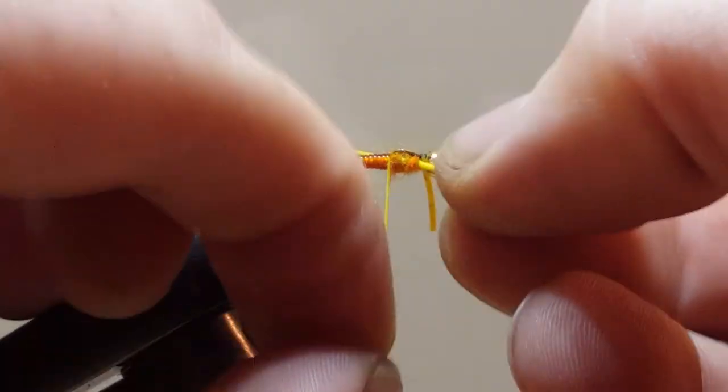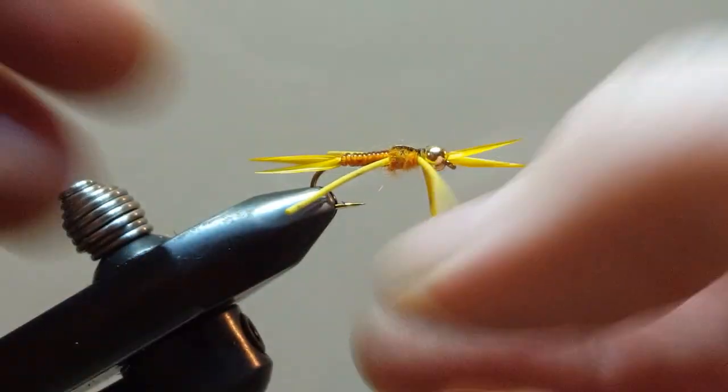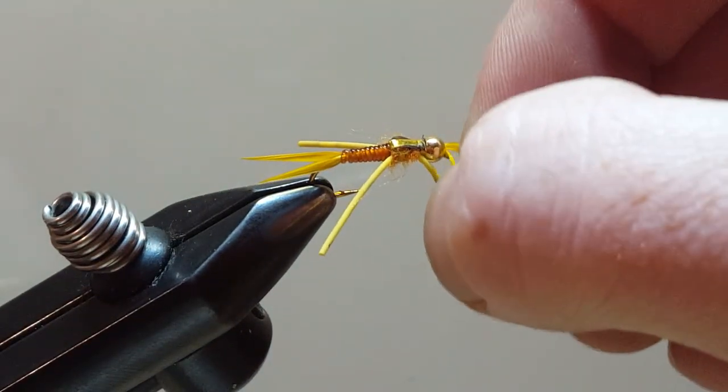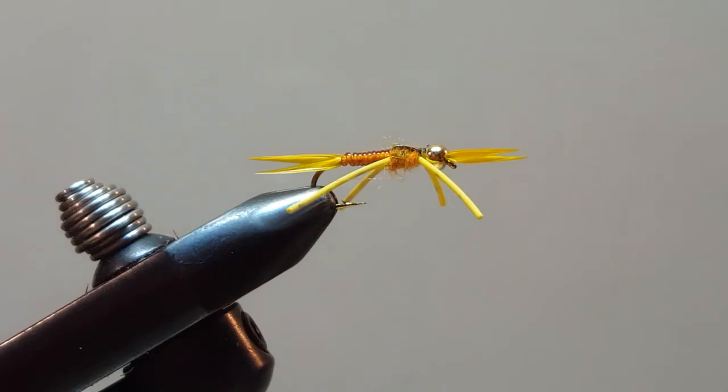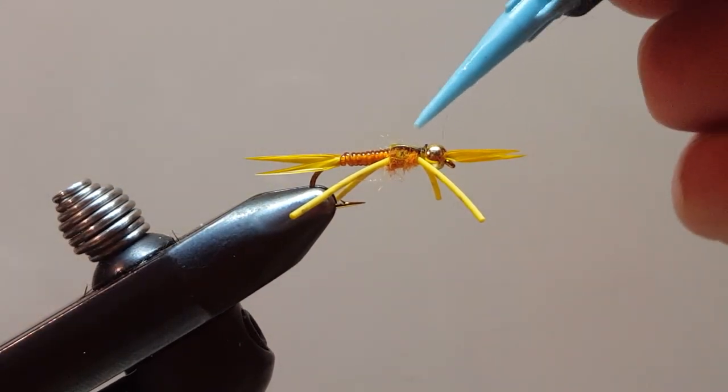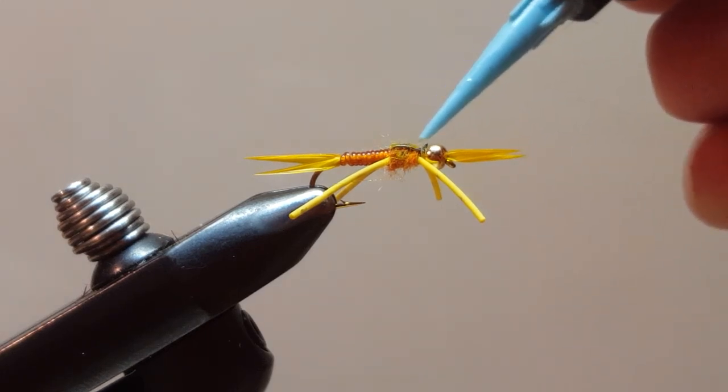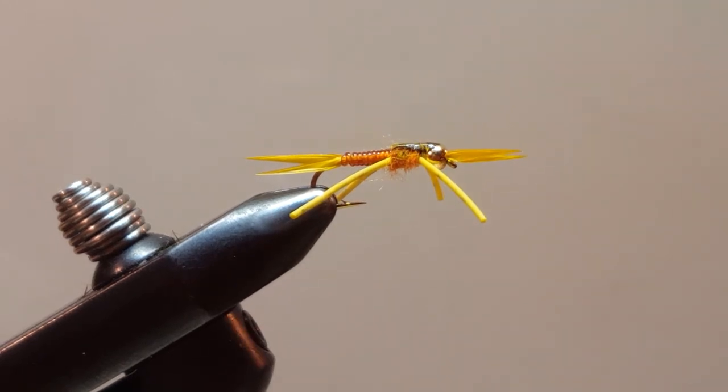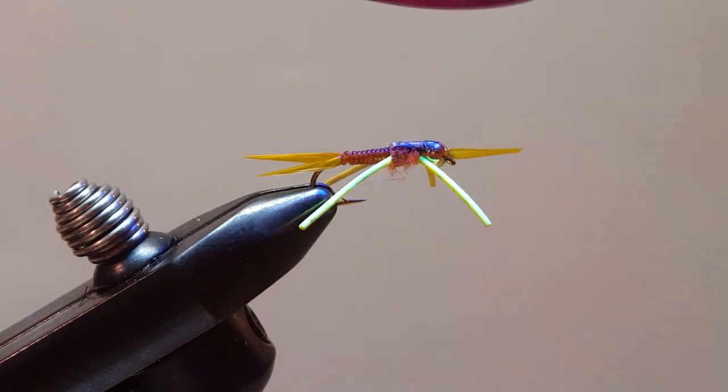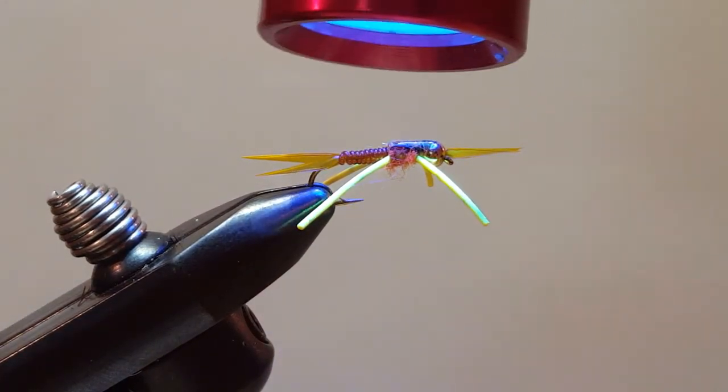All right, once we trim off our tie-in thread, we're going to adjust our legs. Get a little pull. Give this one a little bit of a pull. And I squished my biot a little bit, but that's all right. All right, last and final step, we're just going to do one little droplet of UV clear. This is thin. Right on that wing case and the top of that bead. Let that soak in for a second and we'll give it a quick zap with the flashlight.